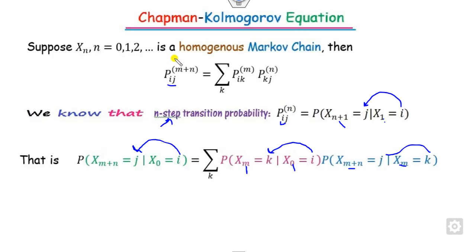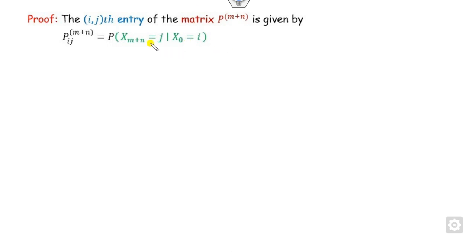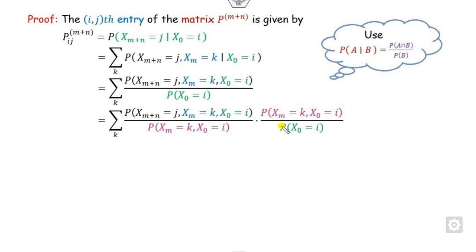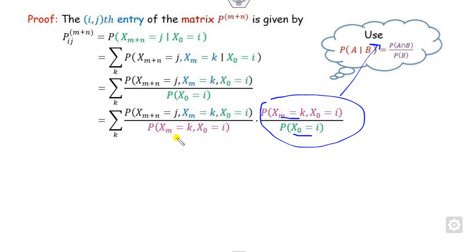The proof is quite straightforward. We start from the definition of p_ij. Moving from stage 0 to stage m+n, there is an intermediate kth stage. Using the conditional probability formula — P(A|B) = P(A∩B) / P(B) — we introduce this intermediate step. Multiplying and dividing by the intermediate probability, we identify the terms as conditional probabilities in the appropriate form.